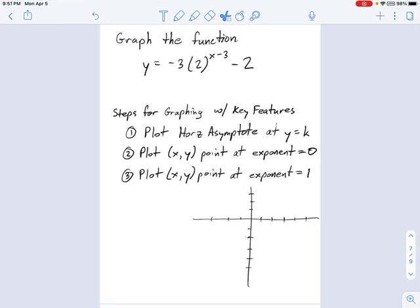We are asked here to graph the function y equals negative 3 times 2 to the x minus 3 minus 2. And you may be looking at this thinking, wow, that's a lot of transformations. I've got a reflection right here that looks like a vertical reflection, a vertical stretch, and then a horizontal shift, and then a vertical shift right here. So we've got at least four transformations to deal with.